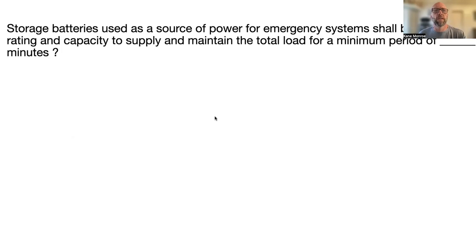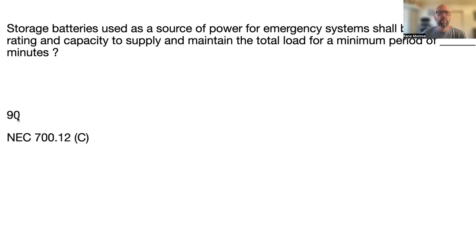Next question: storage batteries used as a source of power for emergency systems shall be of suitable rating and capacity to supply and maintain the total load for a minimum period of blank minutes. The answer is 90 minutes — you need 90 minutes for people to get out of a building. That's found at NEC 700.12(C). Highlight 700.12(C), 90 minutes.